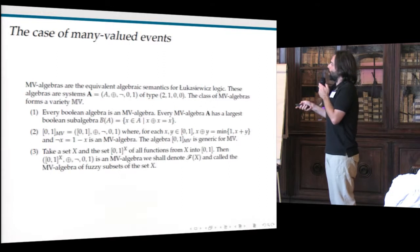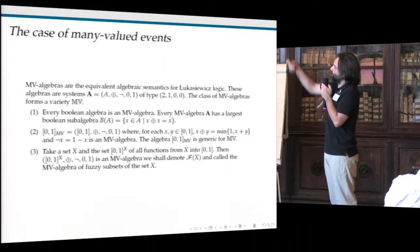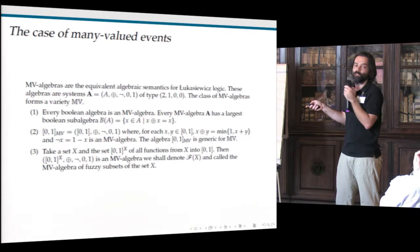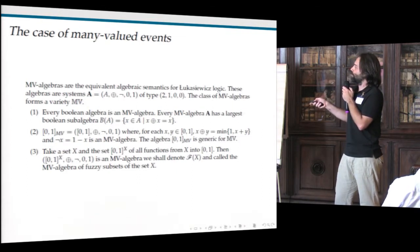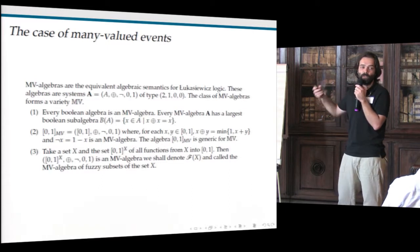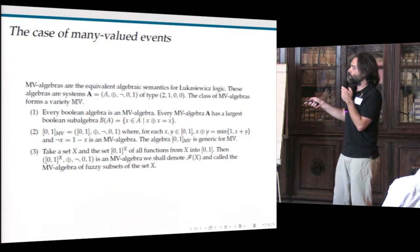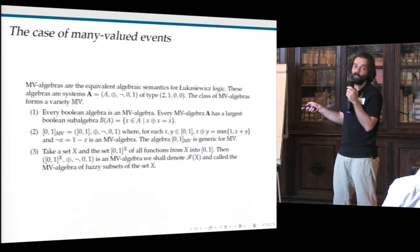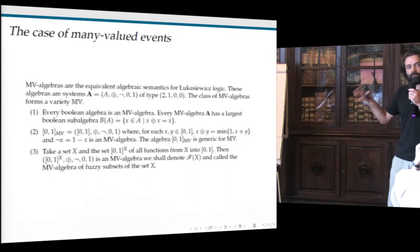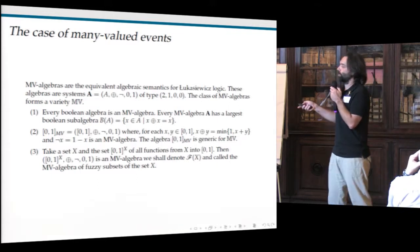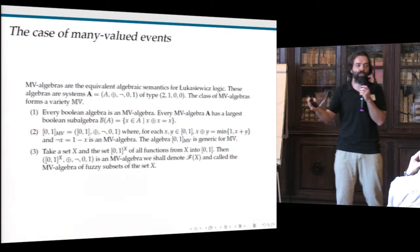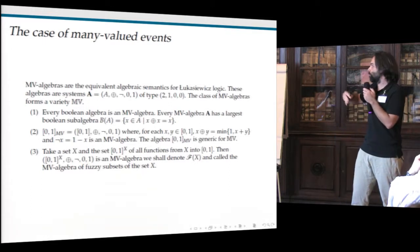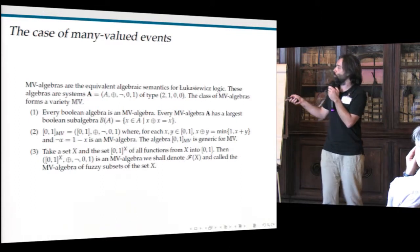More generally, you can take any set X, take all functions from X to [0,1], and define the same operations pointwise, and you get again an MV algebra. For the rest of the talk, we always stay at this level — we always consider MV algebras of this kind. When I speak about an MV algebra, just think about the algebra of functions from a finite set to the reals with these operations defined pointwise.